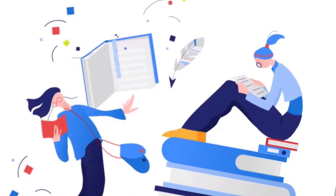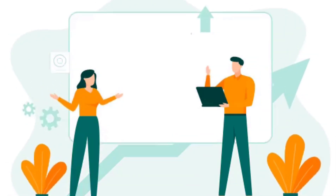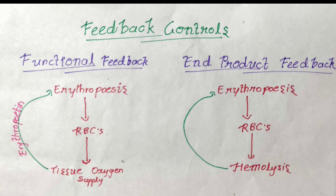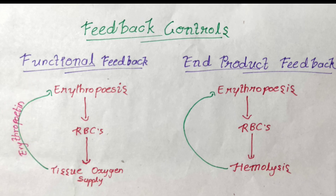Regulation of erythropoiesis — most often we concentrate on the steps and forget to read about the regulation, but it is also very important. Here we have feedback control: functional feedback and end-product feedback. The function of RBCs is tissue oxygenation — when there is reduced tissue oxygenation, it stimulates erythropoiesis through erythropoietin. For end-product feedback: RBCs are the end products of erythropoiesis, and when there is hemolysis, it itself stimulates erythropoiesis.